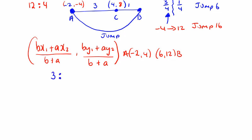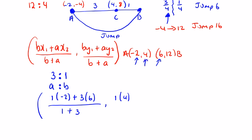So let's just apply this information into the formula here. The ratio is 3 to 1, that's a to b. So bx₁ is 1 by -2, that's x₁, plus a which is 3 by x₂ which is 6, all over 1 plus 3. That's my x part. Then if we apply it to the y part, we have 1 by -4, that's y₁, plus 3 by 12 which is y₂, all over 1 plus 3.